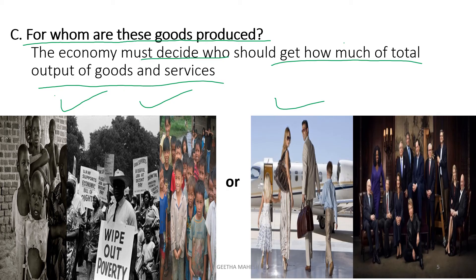If the producer produces for the richer class of people, the profit of the producer is going to increase and savings will be more, but we cannot ensure social justice. If the producer focuses on production of goods and services for the poor section of society, we can ensure social justice, but the savings of the economy and profit to the producer may decrease. So they have to decide how much should be produced for the richer class and how much for the poor section of society. It is all about distribution of national income among different sections of society.